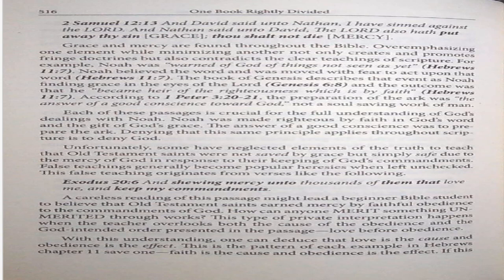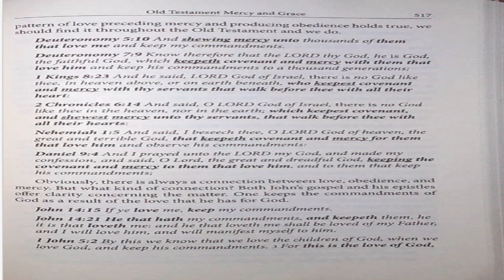A careless reading of this passage might lead a beginning Bible student to believe that Old Testament saints earned mercy by faithful obedience to the commandments of God. How can anyone merit something unmerited through works? This type of private interpretation happens when the teacher overlooks both the cause of the obedience and the God-intended order presented in the passage: love over obedience. With this understanding, one can deduce that love is the cause and obedience is the effect. This is the pattern of each example in Hebrews chapter 11, save one. Faith is the cause and obedience is the effect. If this pattern of love preceding mercy and producing obedience holds true, we should find it throughout the Old Testament, and we do.